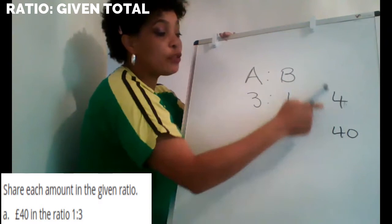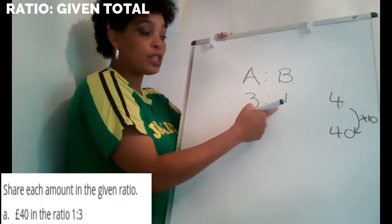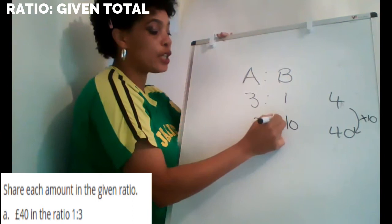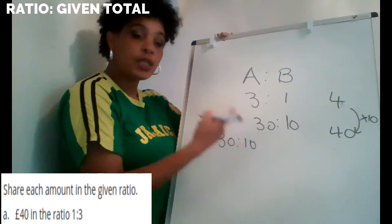What do I do to four to get to 40? Times it by 10. So if I times that by 10, I'm going to times everything by 10. One times 10 is 10, three times 10 is 30. So my answer is 30 to 10. One person is going to get 30 and the other person is going to get 10. 30 plus 10 is 40. So that's question one.